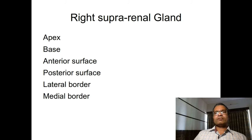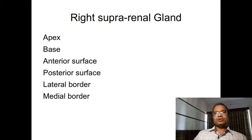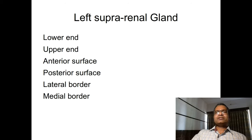The posterior surface of the right suprarenal gland comes in relation with the diaphragm. Deep to the diaphragm, there is the right costo-diaphragmatic recess of the pleura. This completes the description of the right suprarenal gland.